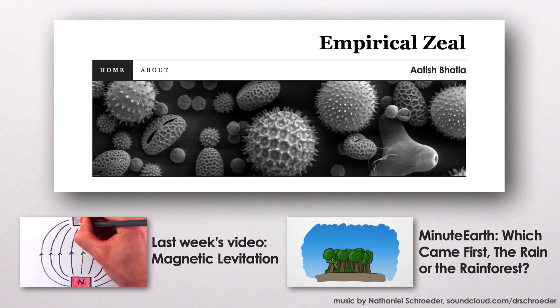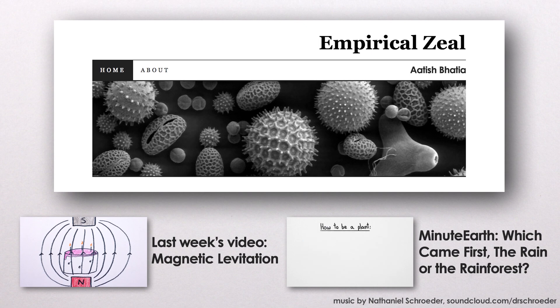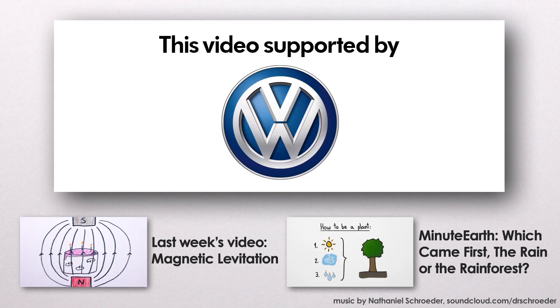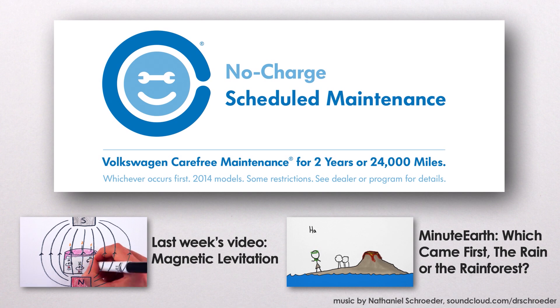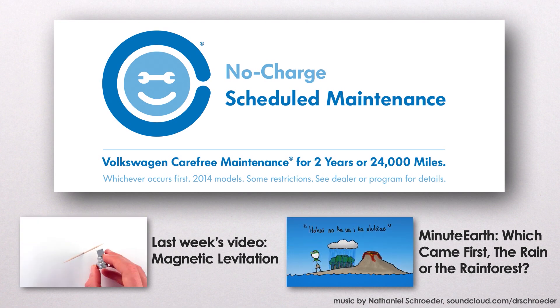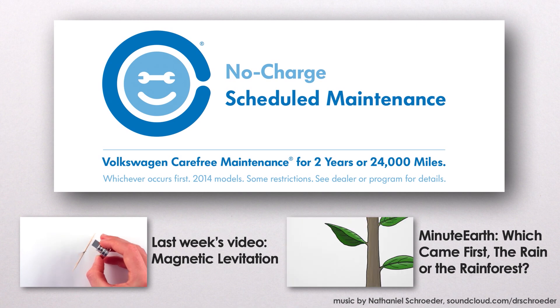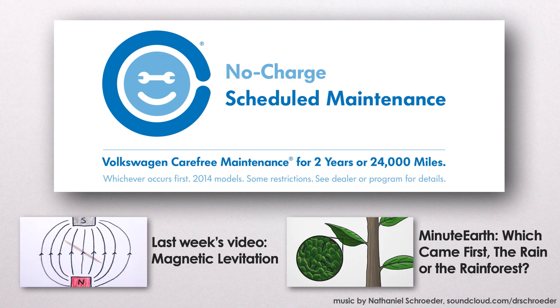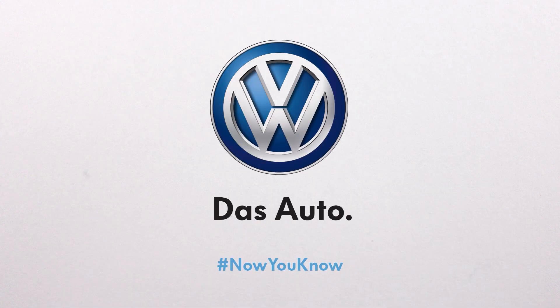I'd like to thank Atish Bhatia of the blog Empirical Zeal for helping me write this video, and also Volkswagen, who want you to know they're doing their best to slow down time by offering no charge scheduled maintenance for the first two years or 24,000 miles on every new car. Time slows down when you're moving, so driving 24,000 miles will keep your car 5 nanoseconds younger.